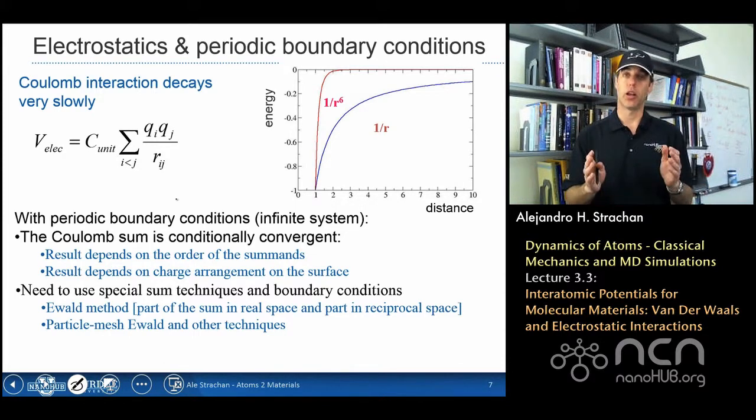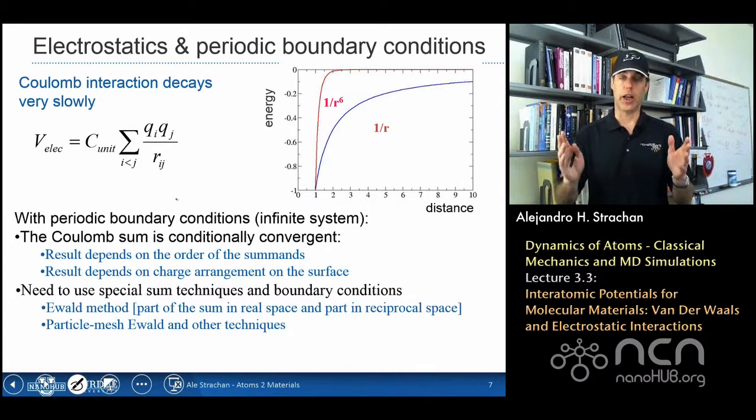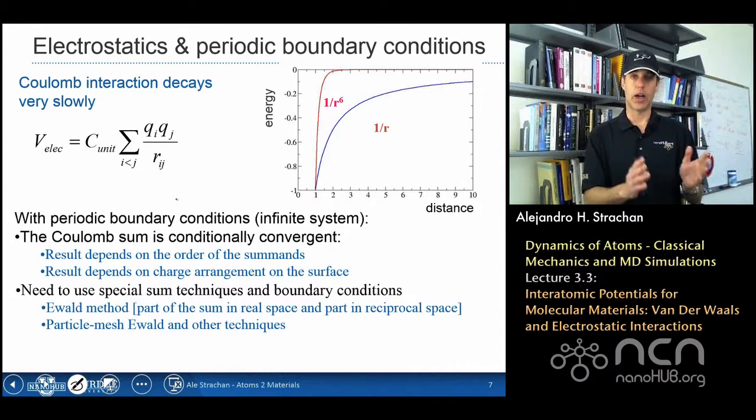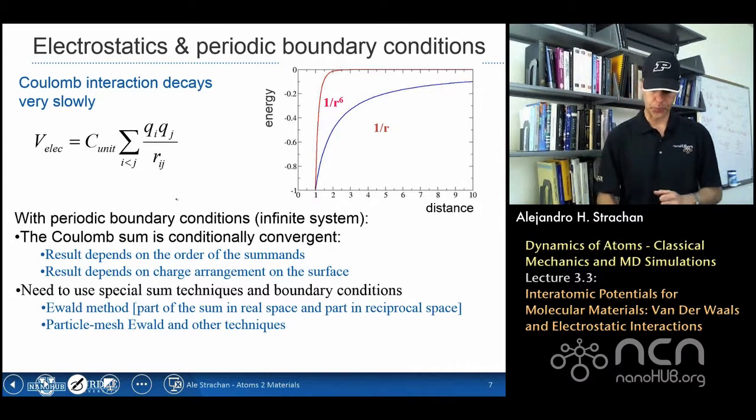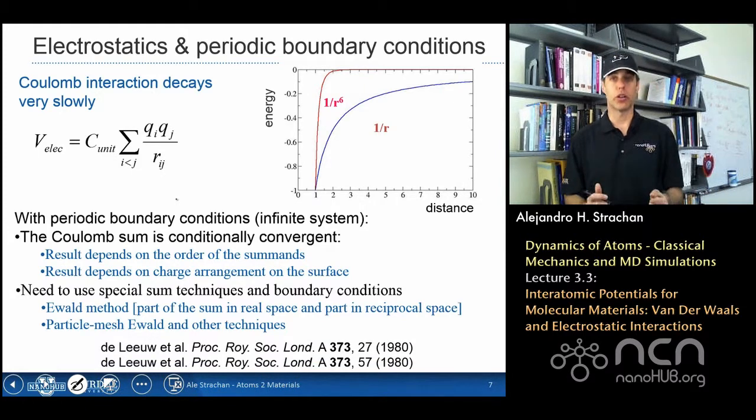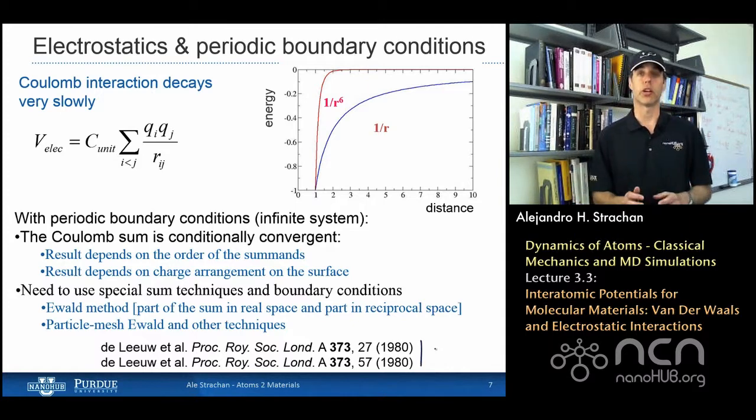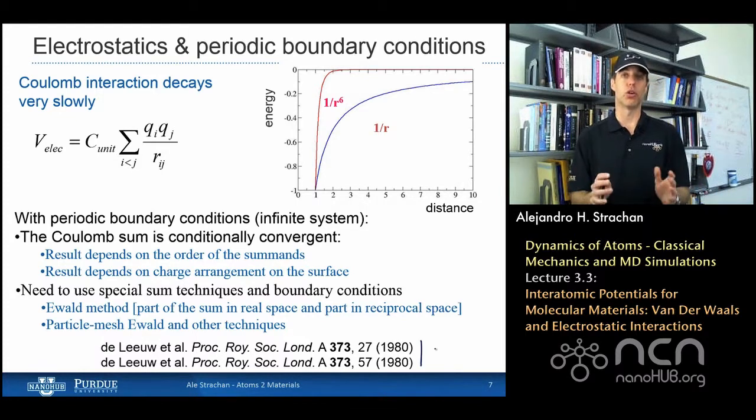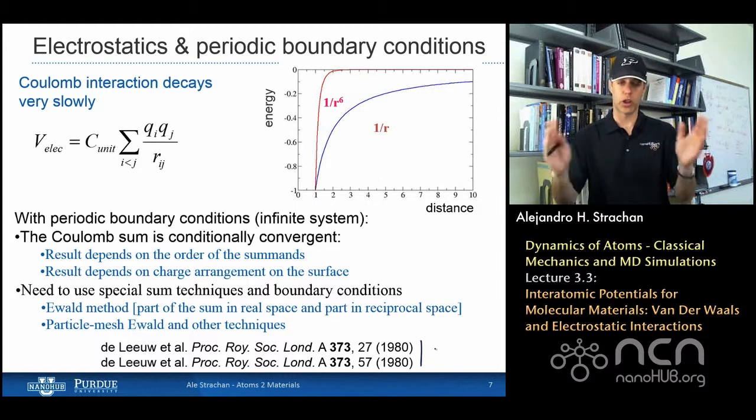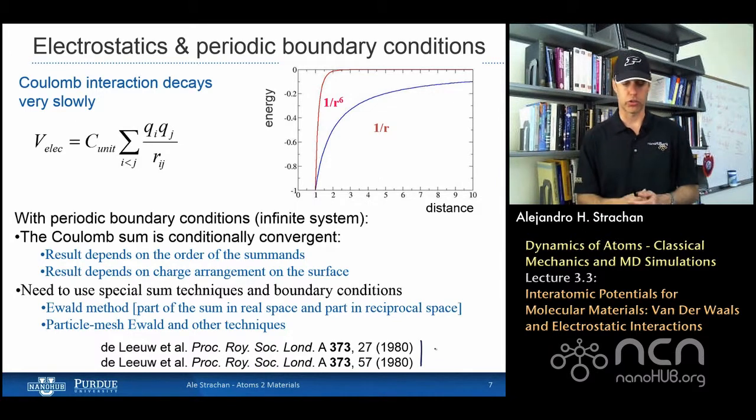There's a variety of them, and all of them allow you to treat long range interactions in an accurate way, but also in a computationally manageable way. To read more about the physics of these infinite sums, these two papers are actually very interesting. So it's very instructive to read them, to go over them and understand what type of decision one needs to make when dealing with long range interactions like Coulomb.